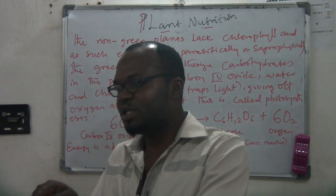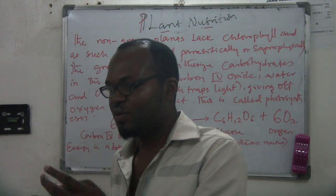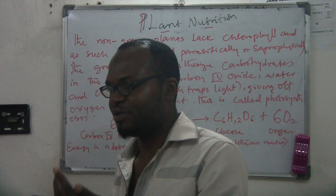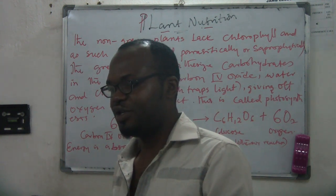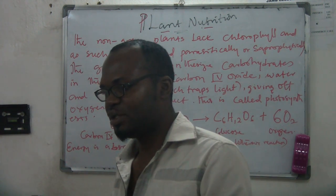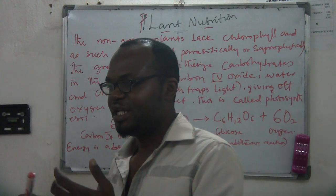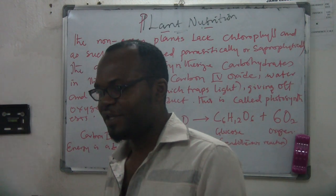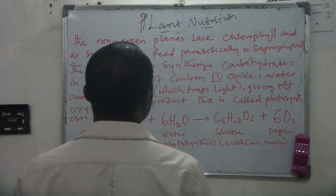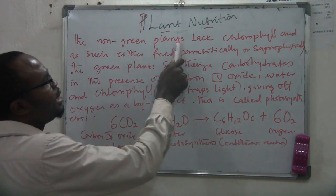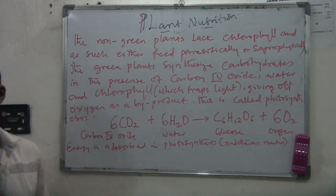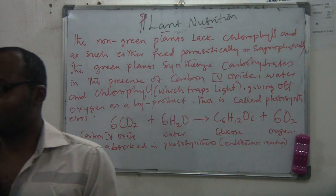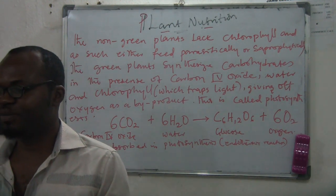Any plant that is non-green is feeding using either of the two modes of nutrition — parasitically or saprophytically. Saprophytes are those organisms that feed on dead organisms, whereas parasites feed on other living organisms and cause harm to them. So that is how non-green plants feed. Plant nutrition covers how both green and non-green plants feed.